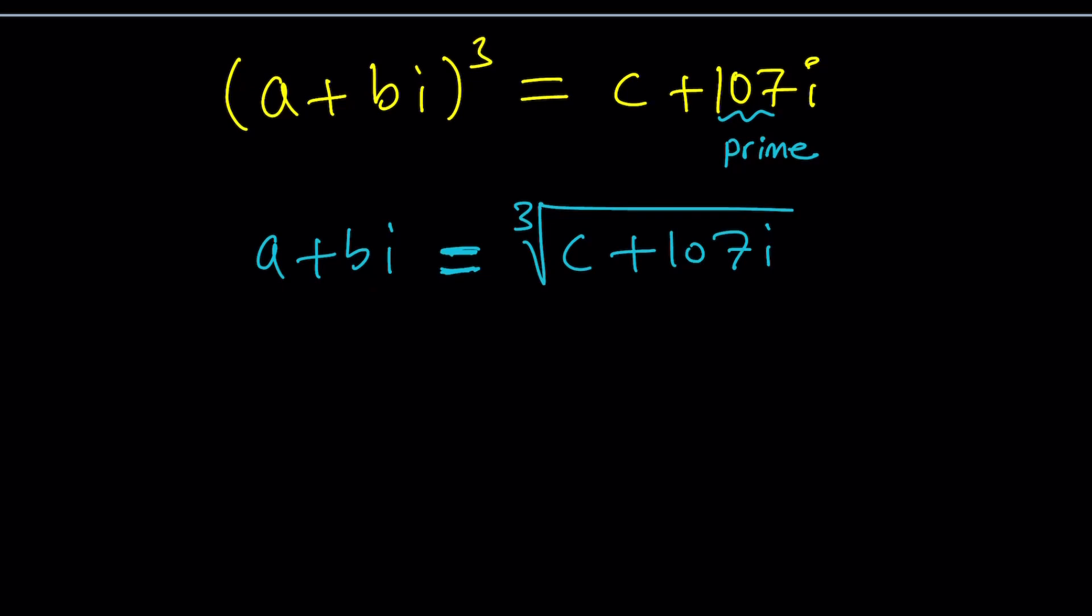So anyways, we're trying to cube root this number. But interestingly, ABC satisfied this equation. And the only number we know is 107. Anyways, I talk too much. Let's get to work.